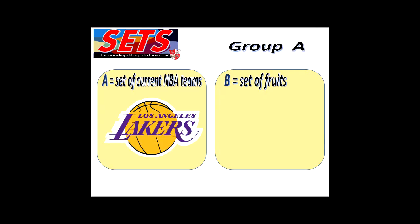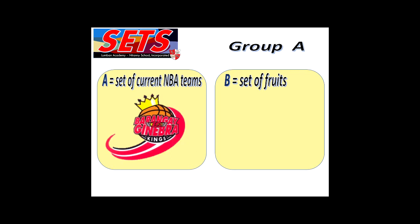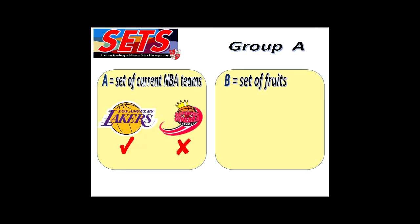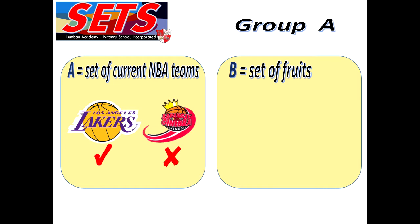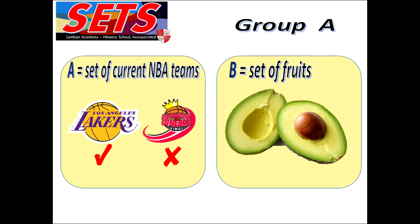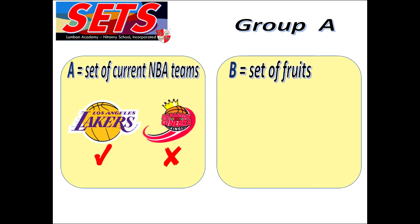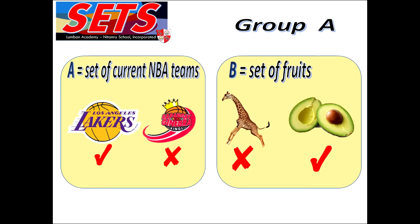Which of these two groups have well-defined elements? Let's take a look at set A first. Is Los Angeles Lakers an element of set A? What about Barangay Hinebra Kings? Los Angeles Lakers is a member of set A, while Barangay Hinebra Kings is not. For set B, the set of roots: is a giraffe a member? Of course not, because a giraffe is an animal, while avocado is clearly a member of set B.